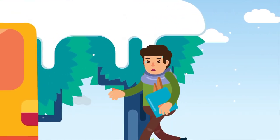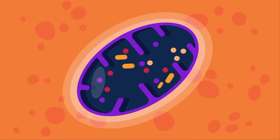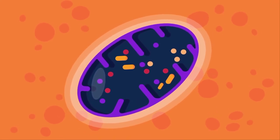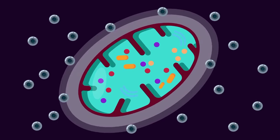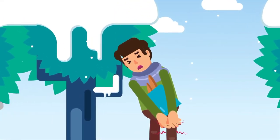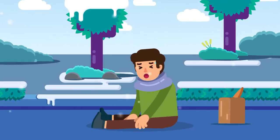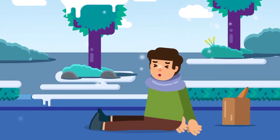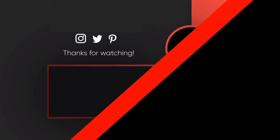In human beings, during strenuous activity, breathing is not able to provide sufficient oxygen for respiration. Muscles experience a shortage of oxygen, so the aerobic process becomes anaerobic. This change causes formation of lactic acid. Accumulation of lactic acid causes muscular cramps and fatigue as a safety measure to protect the muscle cells. Rapid breathing after the activity helps to repay the oxygen debt by increasing oxygen in the muscles, thus converting the process back to aerobic.